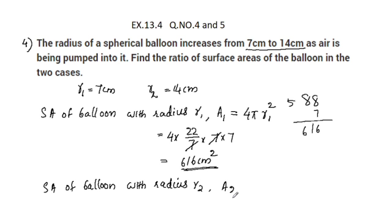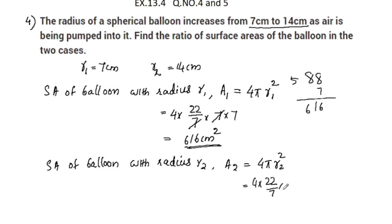The surface area of the balloon with radius r2 is equal to 4 into 22 by 7 into 14 into 14. Here 7 into 14 gives 2, so 88 into 2 is 176.